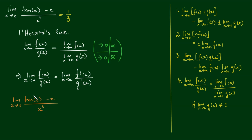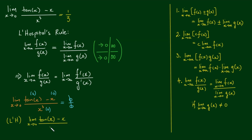For our limit, as x approaches 0: tan(x) approaches 0, x approaches 0, and x cubed approaches 0 — so we do have a case of 0 divided by 0. So by L'Hôpital's rule, the limit of tan(x) minus x over x cubed equals the limit as x approaches 0 of the derivative of the top over the derivative of the bottom: sec²(x) minus 1, over 3x².